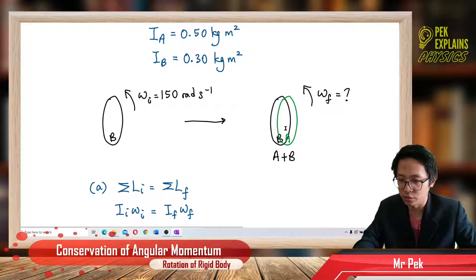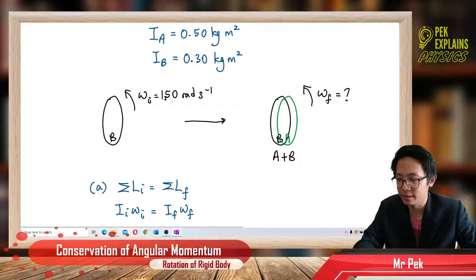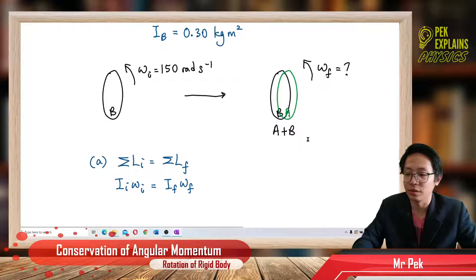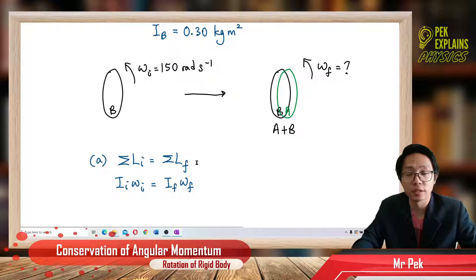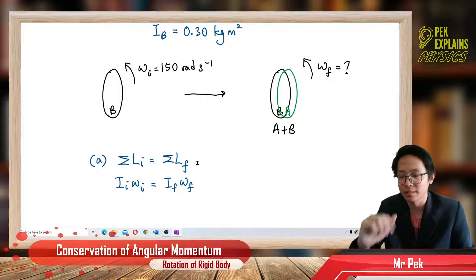Always picture out our situation in simpler terms. B is rotating initially with the initial angular velocity, then A and B combine. This is similar to conservation of momentum in linear motion. In linear motion we have P equal to mV, where P is the momentum.